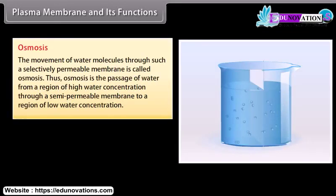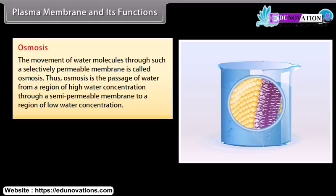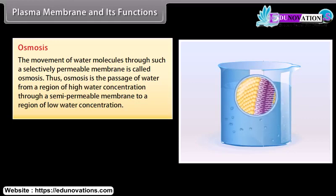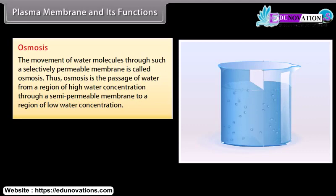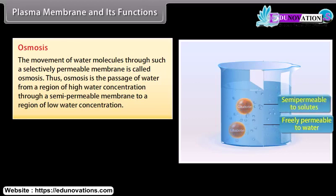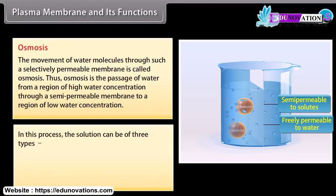The movement of water molecules through a selectively permeable membrane is called osmosis. Osmosis is the passage of water from a region of high water concentration through a semi-permeable membrane to a region of low water concentration. In this process, the solution can be of three types: hypotonic, isotonic, and hypertonic.